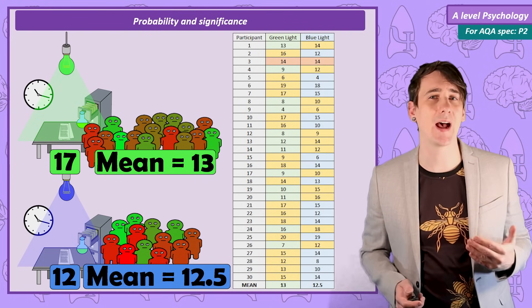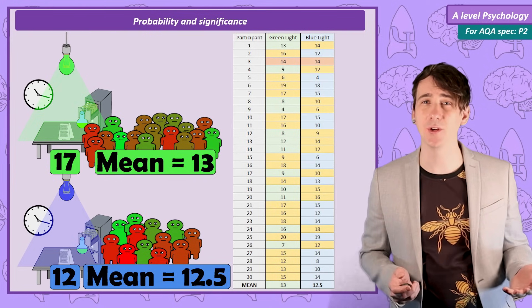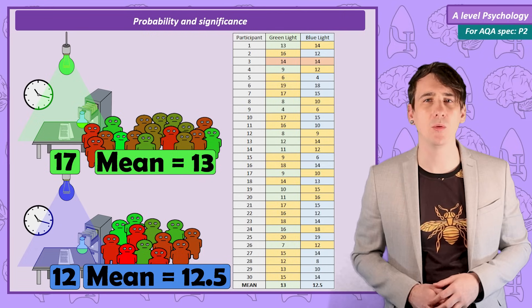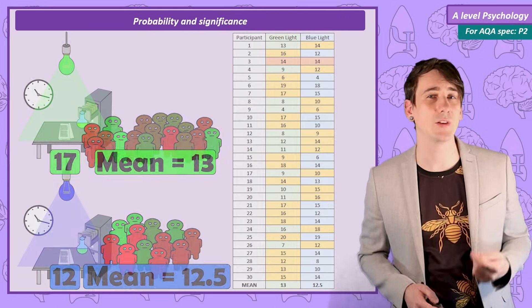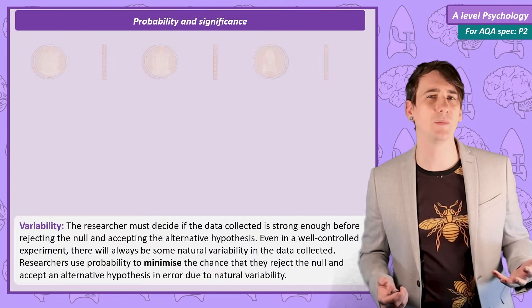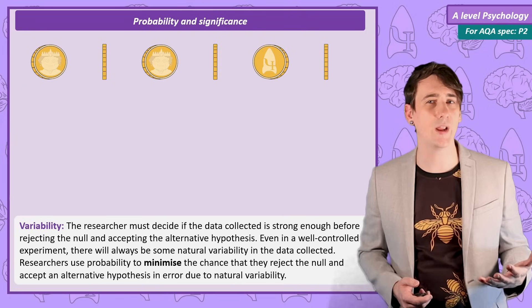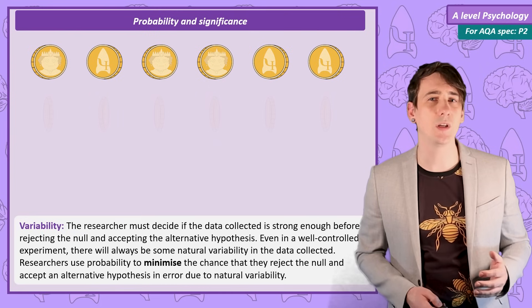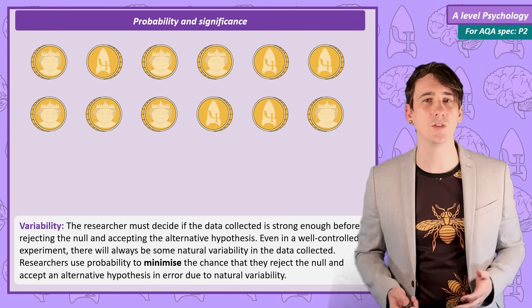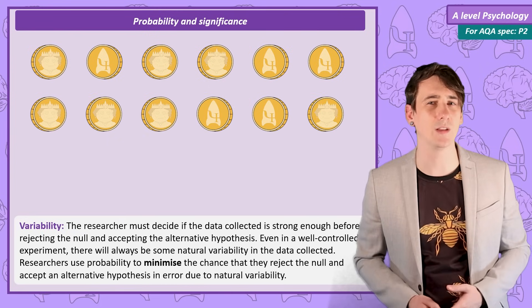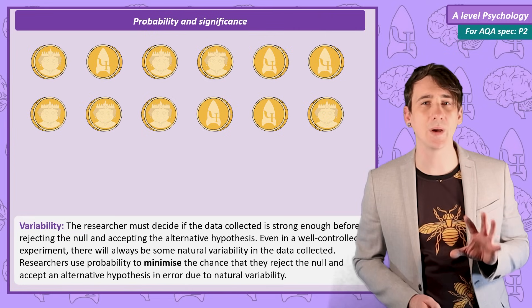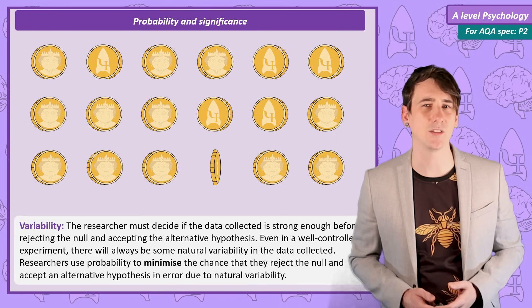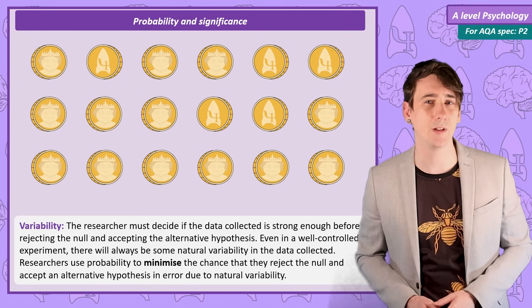If the results are due entirely to chance, we might expect, on average, 15 people to recall better in green light, and 15 in blue light, but we are not going to get those exact numbers every time we run the experiment. Just like if we flip 6 coins, we are not always going to get 3 heads and 3 tails, there is going to be some variability. Just because the first time we try we get 4 heads and 2 tails, it doesn't mean we have a weighted coin. And sometimes by chance, if we kept flipping coins, we would even get 6 heads in a row. When it comes to chance, there is variability.